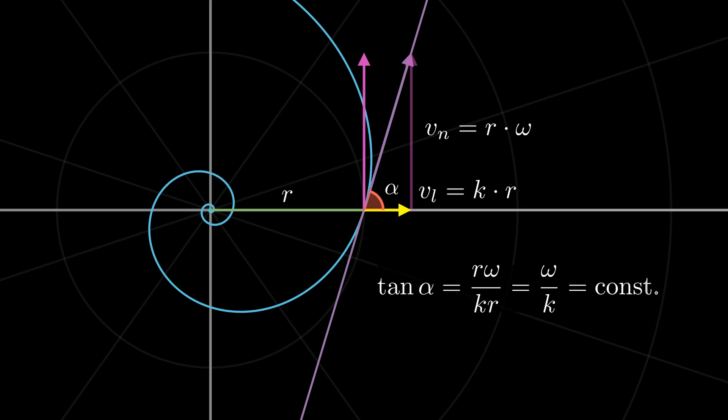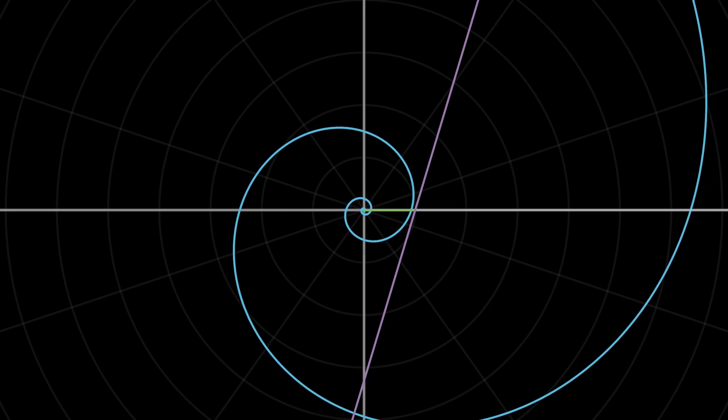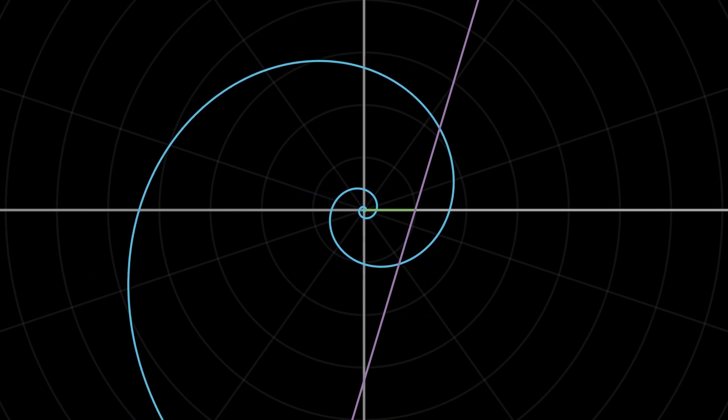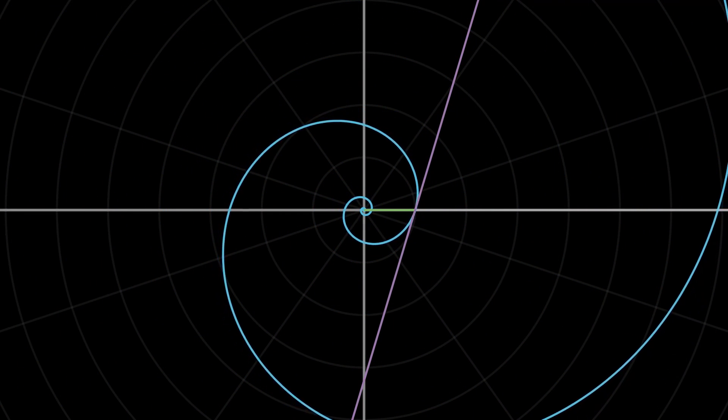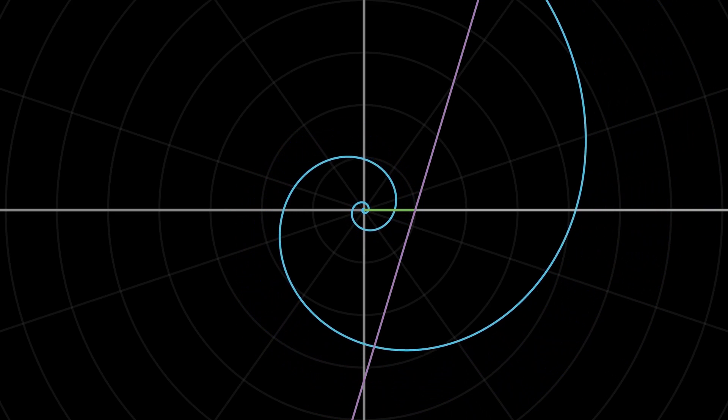As a consequence, the curve remains rotationally invariant. That is, no matter how much we rotate the curve about the origin, we get the same curve, just in a different scale.